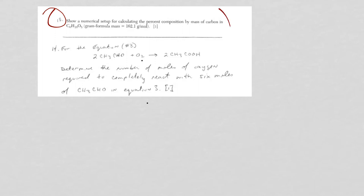It's asking basically the same question that's been asked a couple of times. Show numerical setup, which means the numbers for calculating percent composition by mass of carbon now in this formula.